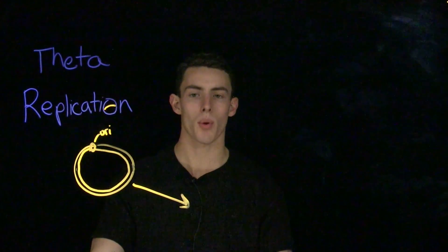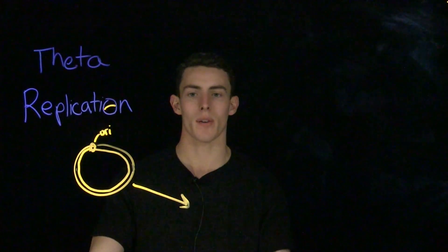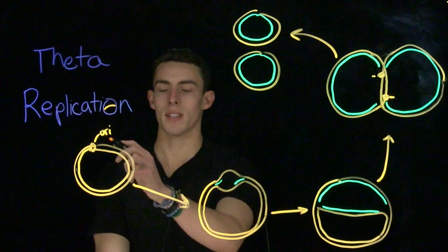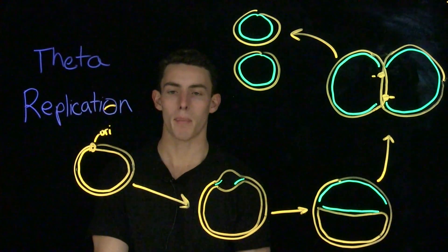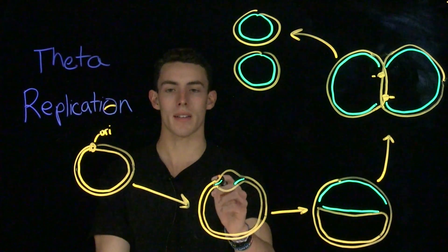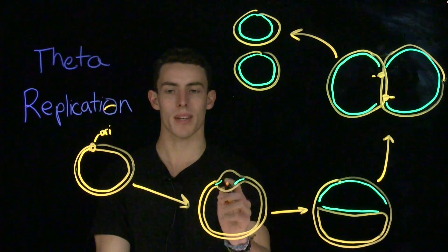Theta replication is a very common type of replication in prokaryotic cells, or cells with a circular molecule of DNA, that ends up with a shape in the middle of the process that looks like a Greek letter theta. Theta replication starts with the binding of proteins to the origin of replication.